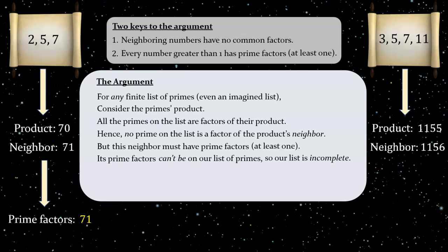Now, of course, no one in their right mind would ever have thought that our tiny list, 2, 5, and 7, constituted a complete list of all the primes. Nor would anyone think that the tiny list on the right was complete either. But just to watch the logical argument flow through this example as well, let's go ahead and note that, for that list, the product's neighbor, 1156, has the following prime factorization, 2 factors of 2, and 2 factors of 17.